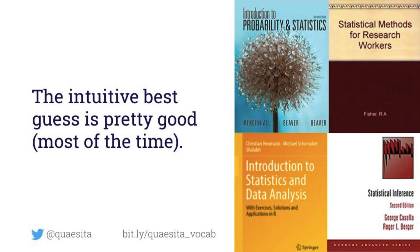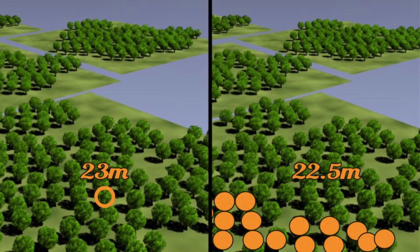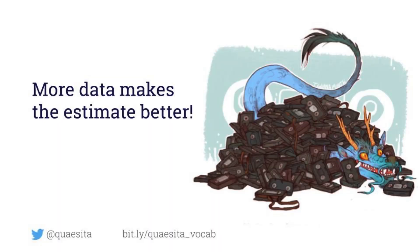Congratulations. So do we even need this course, or are we done after five minutes? Let's see where our intuition begins to let us down. Do you have some sense of which of those two guesses — the first, based on one data point, or the second, based on all those — forms the better best guess? The second one. Why is that? Because it's based on more information. Yes, that's correct intuition as well. The more information you have, the better things are.